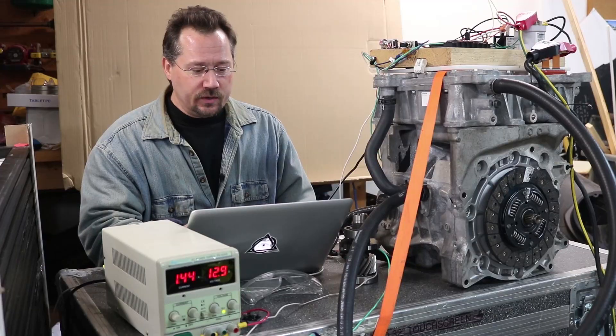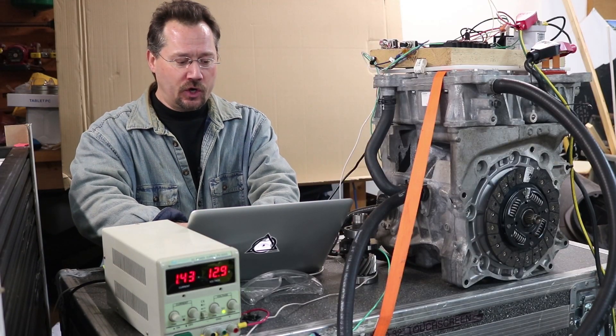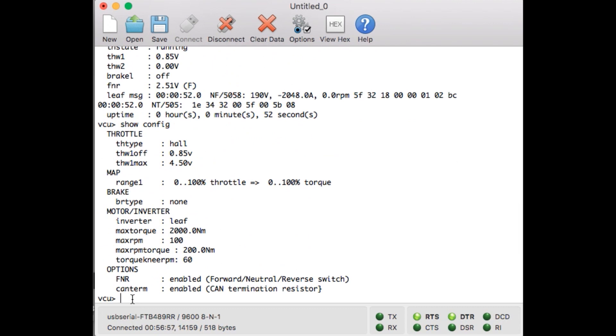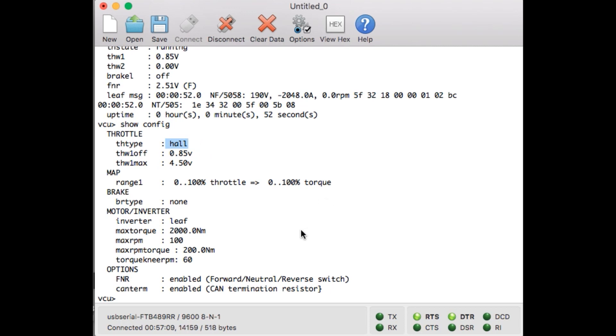It's got some other information down here, for example our battery pack is at 190 volts right this moment here. So if I type in show config it's going to show us basically some of our different settings that we have in here, showing us we've got the Nissan Leaf inverter, we're using a hall effect throttle and some other information.